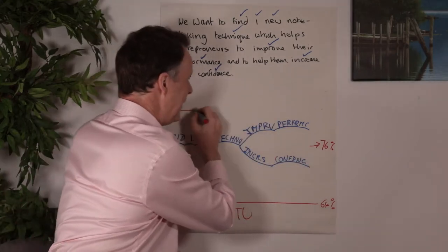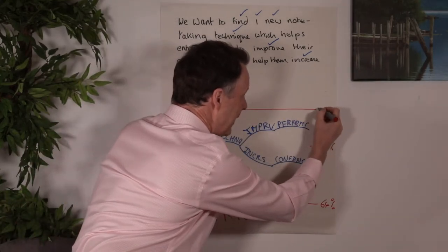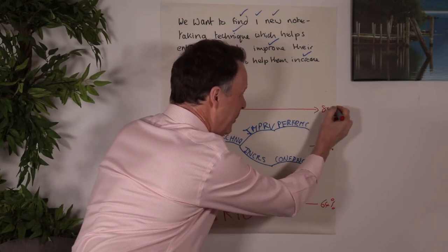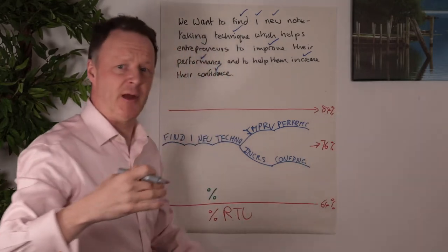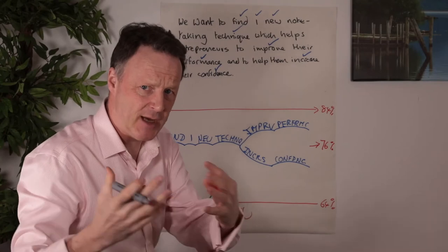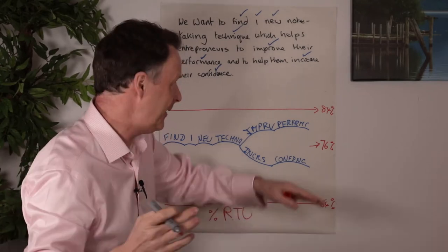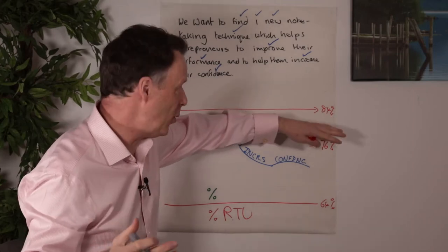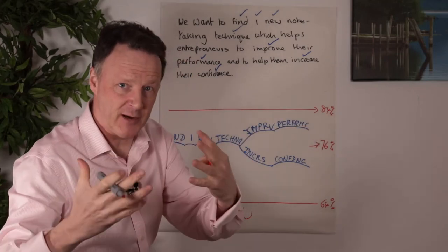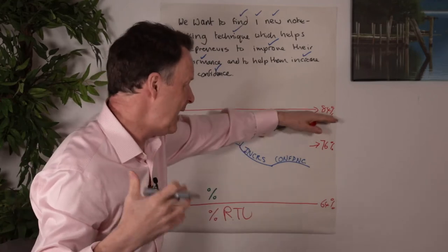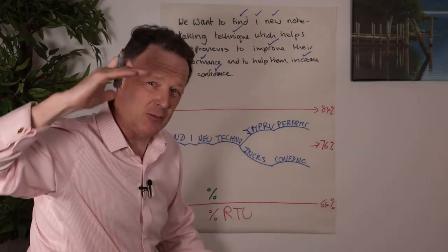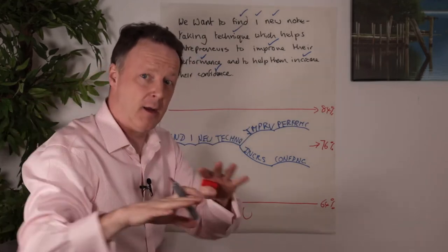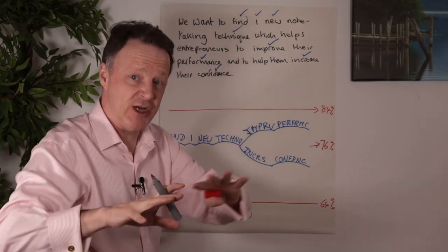And then interestingly enough, after a year, it goes up to 84%. And because as entrepreneurs, we're continually dealing with new subjects, often there's a lot of information, it's coming at speed. We've got a choice now, which we never had before. We can now go into demanding meetings and presentations and our real time understanding will be 84% above that achieved by other entrepreneurs.